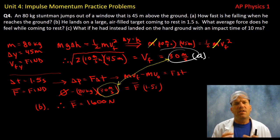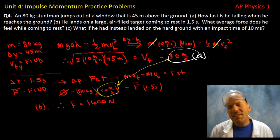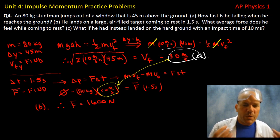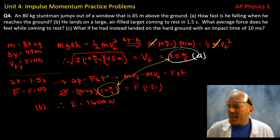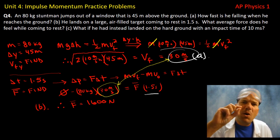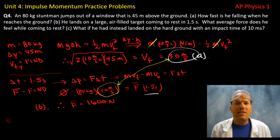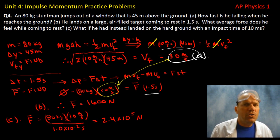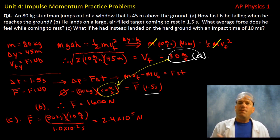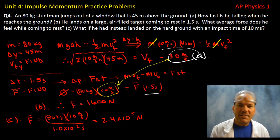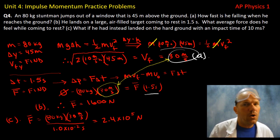Part c: what if he landed on hard ground with an impact time of only 10 milliseconds? From a mathematical reasoning standpoint, we're dividing by that impact time, and if we have a really small number in the denominator, that gives us a really large average force. Plugging in numbers with the new impact time shows the force is much greater in scenario c than b, because the tiny duration in the denominator produces a very large average force.